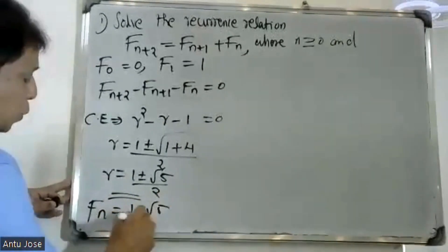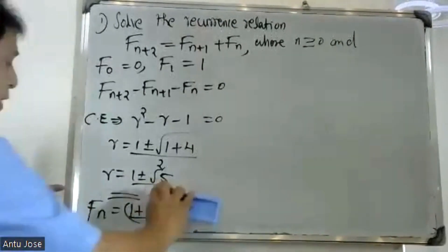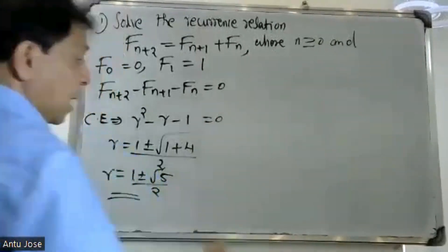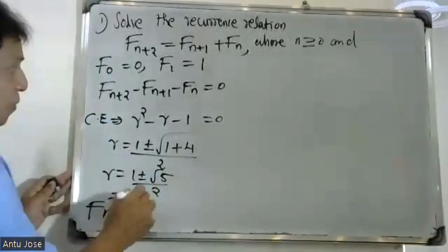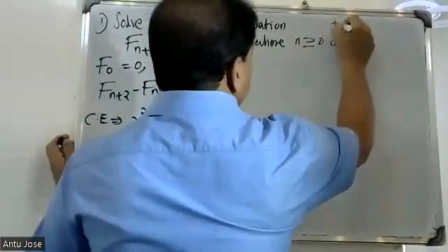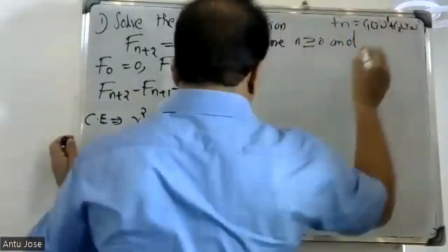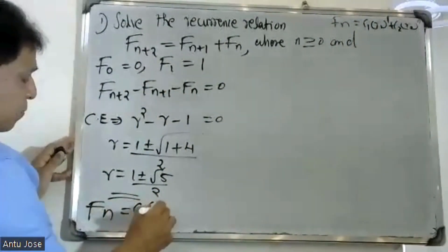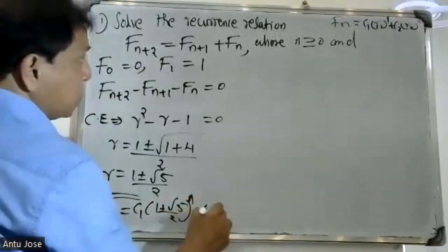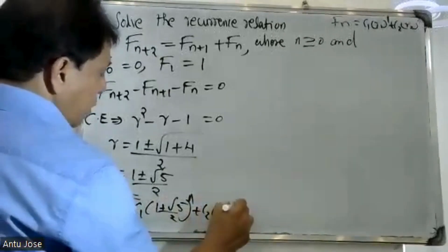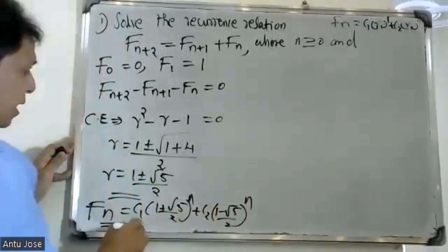The general solution formula is: f(n) equals C1 into r1 raised to n, plus C2 into r2 raised to n. That is, f(n) equals C1 into one plus root five by two, raised to n, plus C2 into one minus root five by two, raised to n.